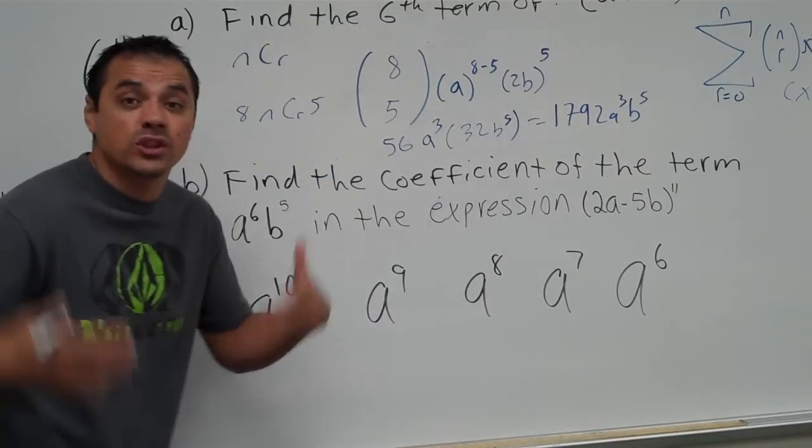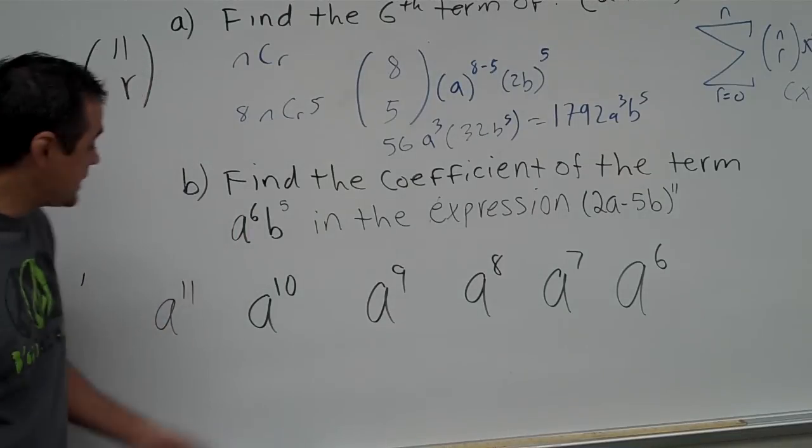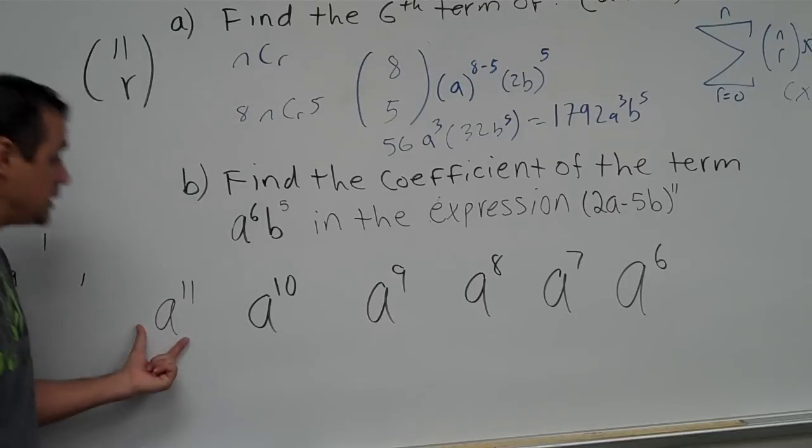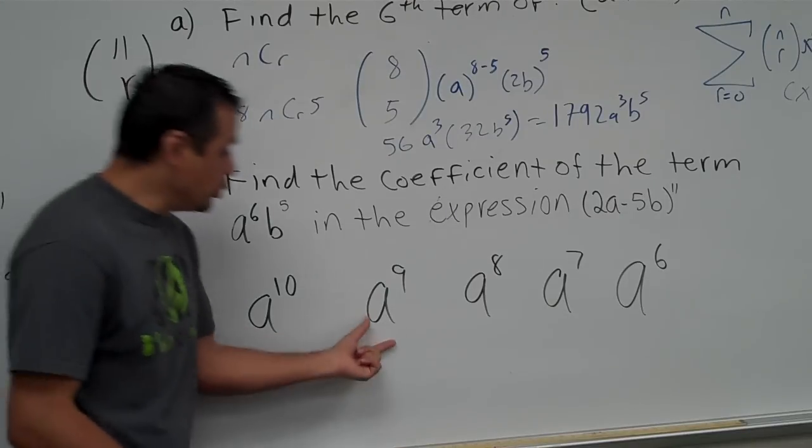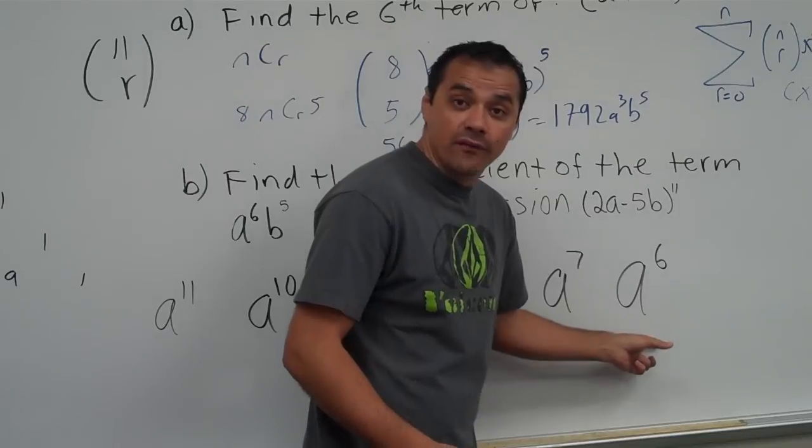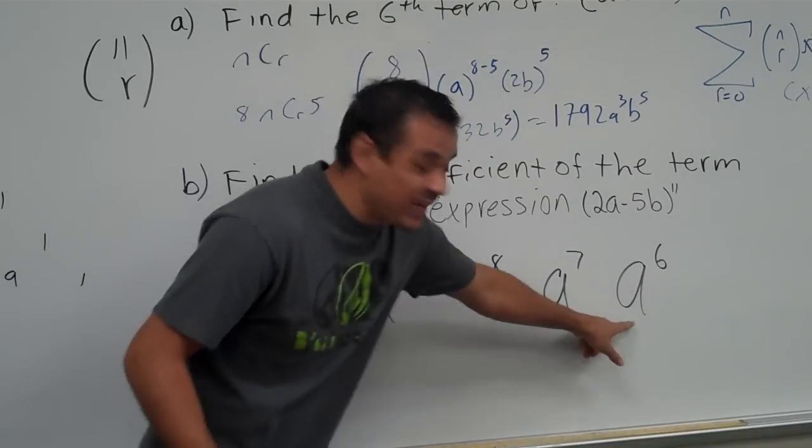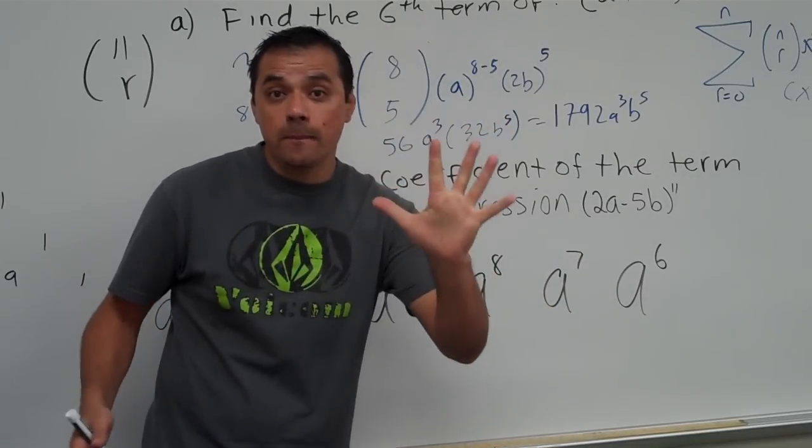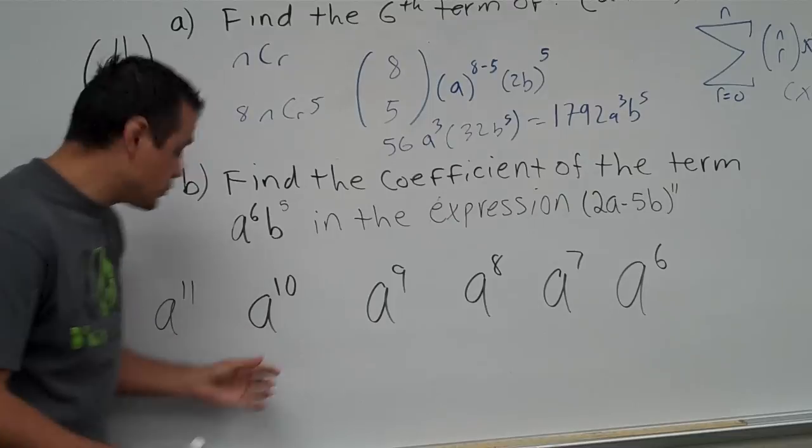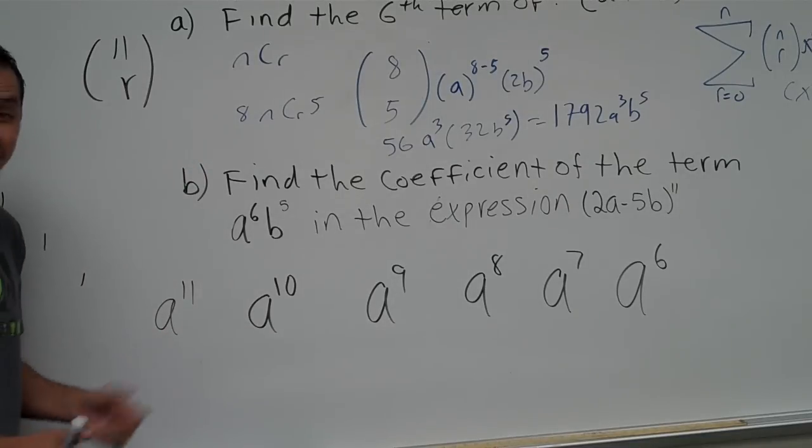No, we don't do that, right? We start with the number 0. We say that our first term is always 0, 1, 2, 3, 4, and 5. Therefore, this is not my sixth term, this is actually my fifth term in the row because, remember, we start with 0 when we start counting them.